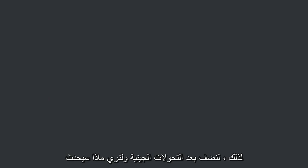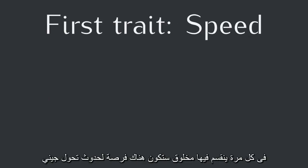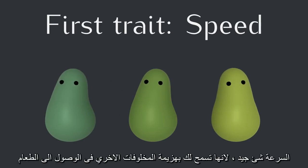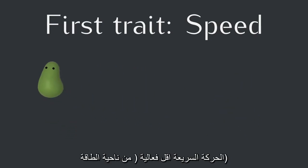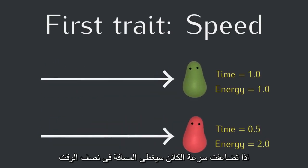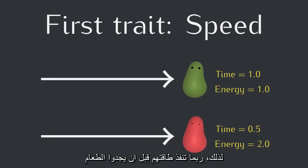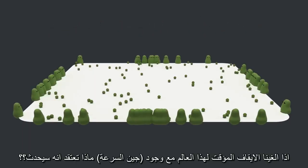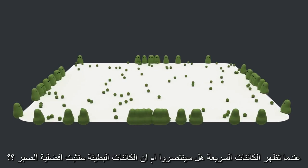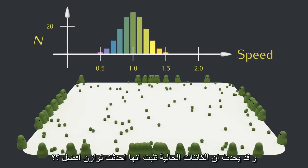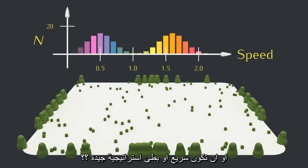So let's turn on mutations and see what happens. Let's start out with one trait varying: speed. Each time a creature replicates, there's a chance that a mutation will give the new creature a slightly lower or slightly higher speed. Speed is great because it allows you to beat other creatures to the food, but speed will also have a cost. Moving quickly is less efficient. If a creature's speed is doubled, it will cover a distance in half the time, but use twice as much energy to go that distance. Faster creatures can't forage over as much ground as slower creatures, so they might not find food before running out of energy. If we unpause this world with speed mutations turned on, what would you predict? When the faster creatures start appearing, will they sprint to victory? Or will the slower creatures prove the virtue of patience? It could also turn out that the current creatures have struck a good balance, or it could be that being fast and being slow are both good strategies.